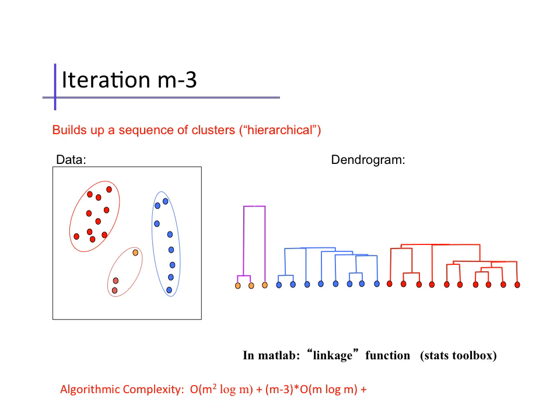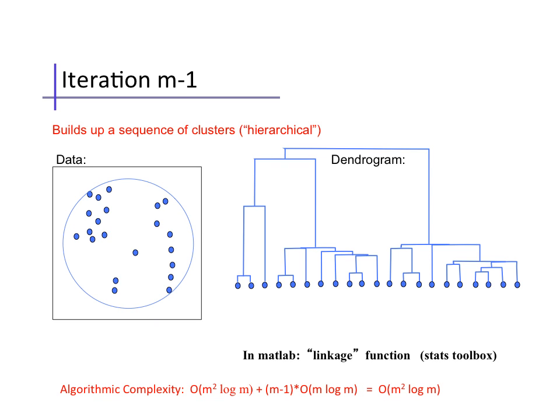This procedure is implemented in the MATLAB statistics toolbox as the linkage function. However, it's more common to simply continue merging, so three clusters become two, until finally, after m minus 1 steps, all the data must belong to the same single cluster. Since each step was m log m, the total work for the merging process is also O(m² log m).